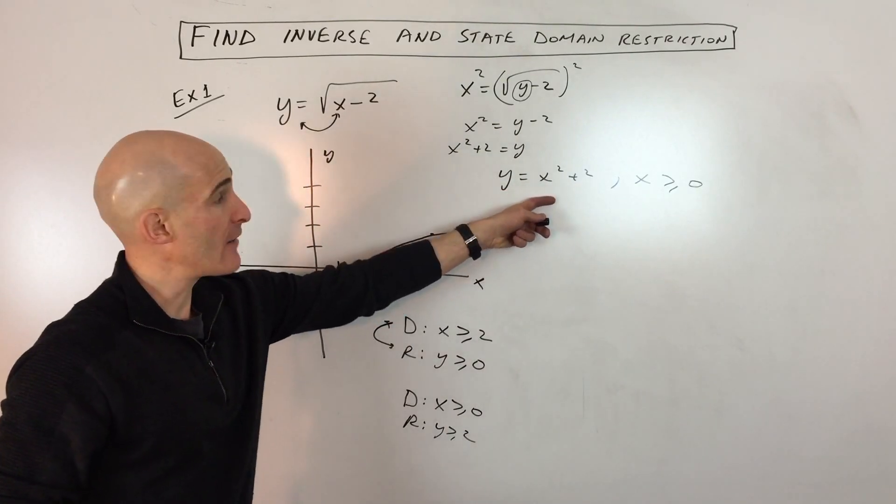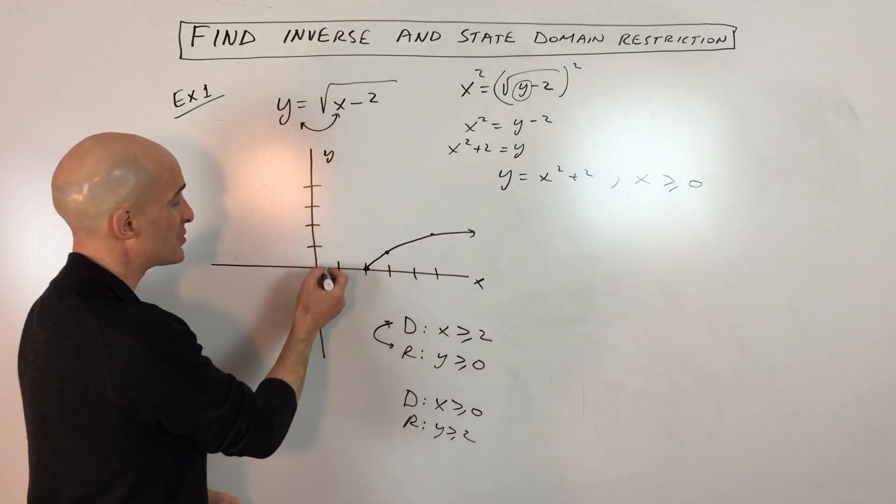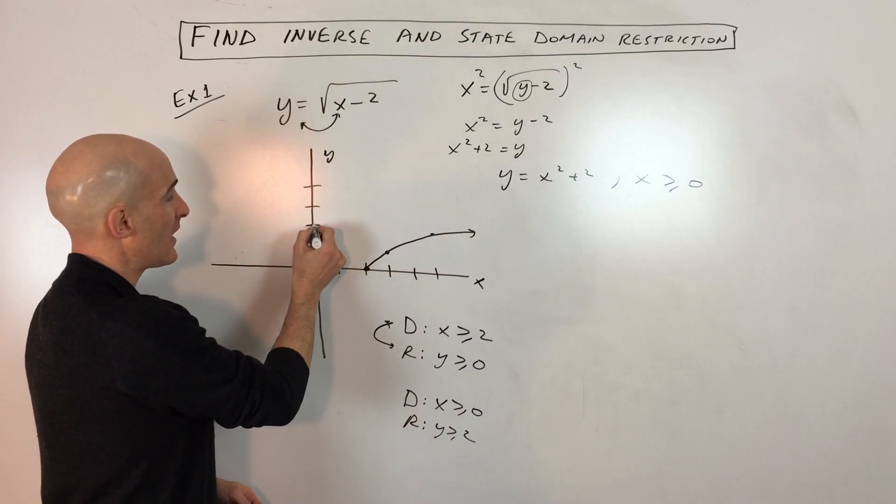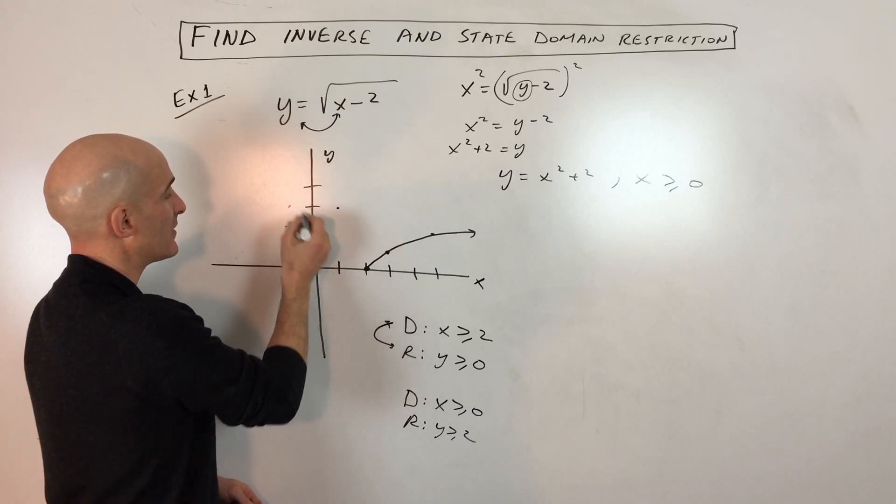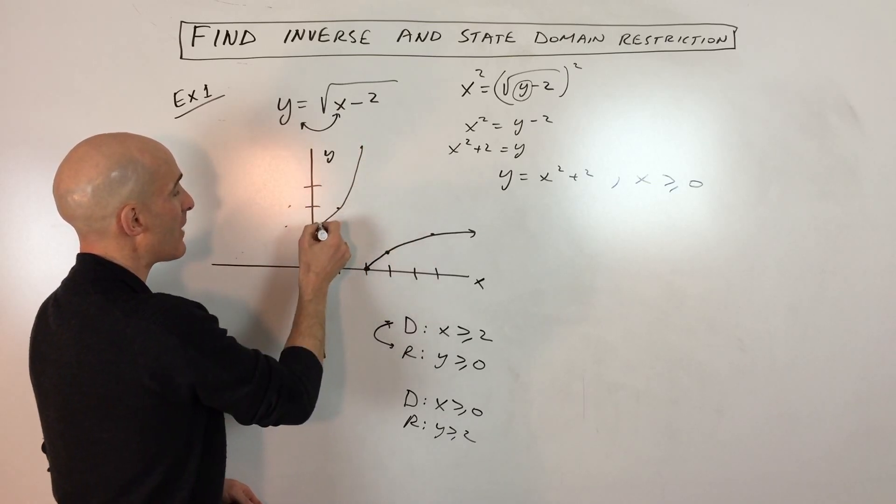Because if I graph this entire graph here, this is a parabola that's been shifted up 2. So it's going to be up 2. And it's going to be like this. So there's our parabola.